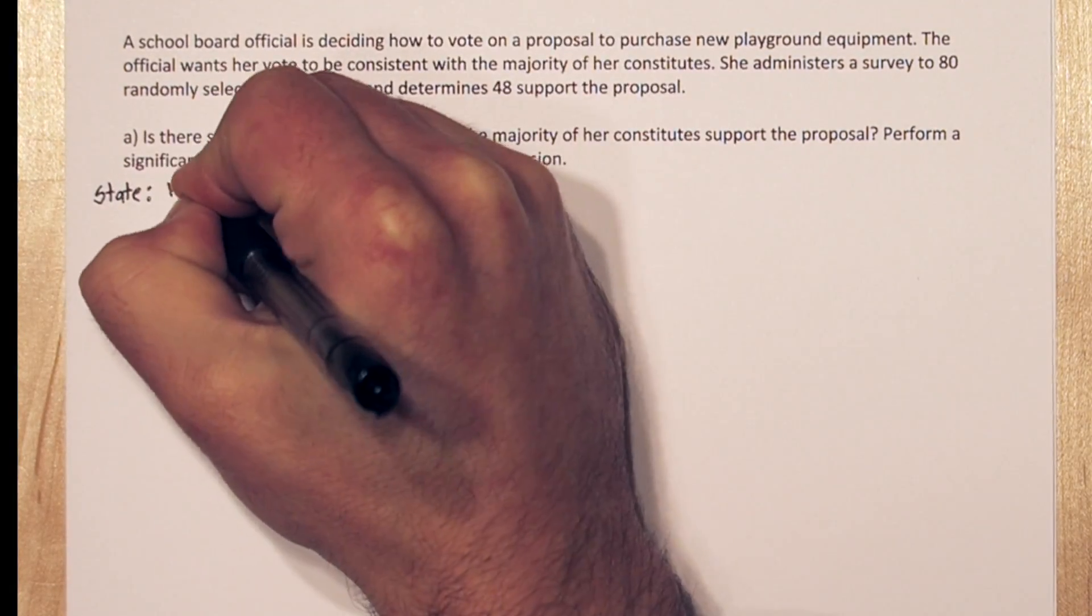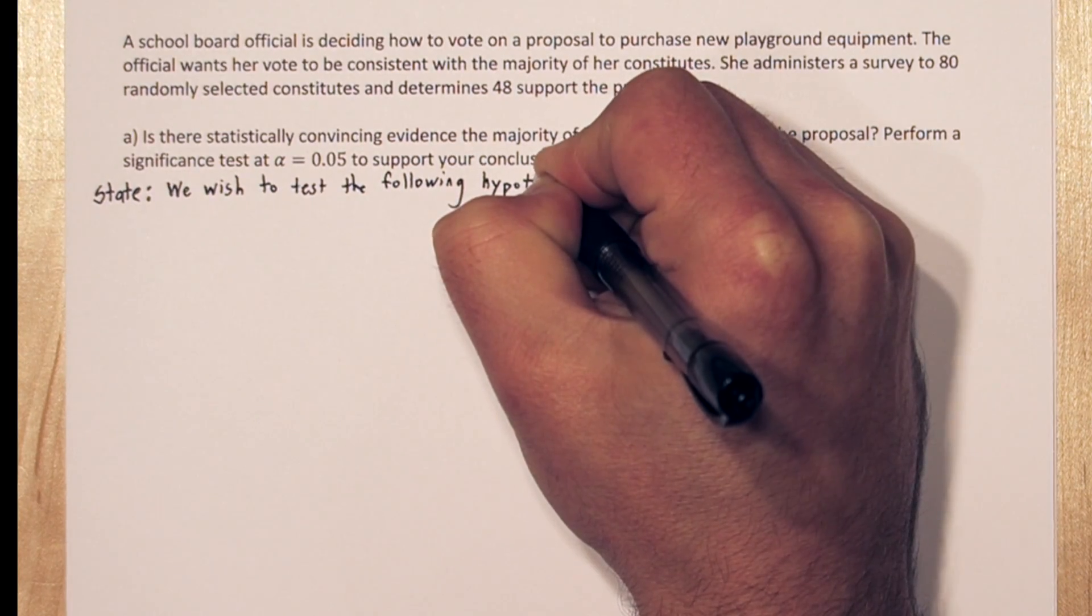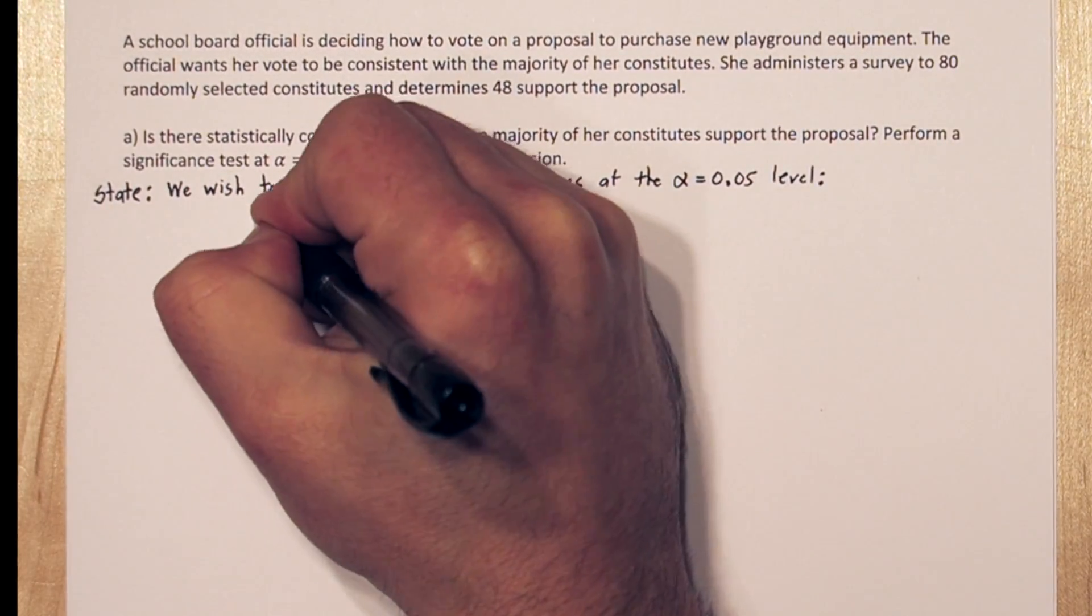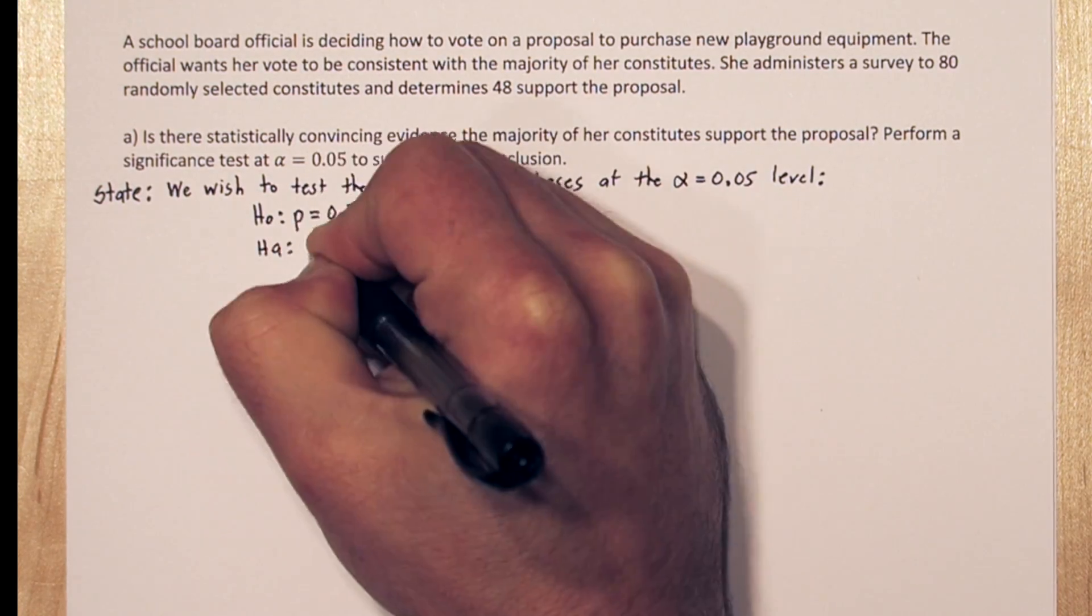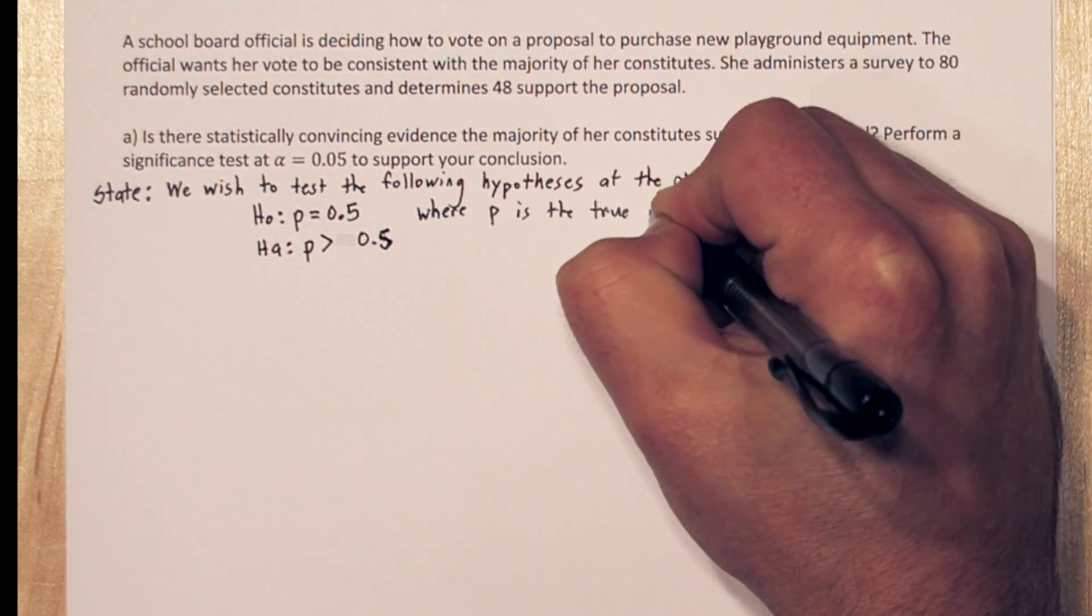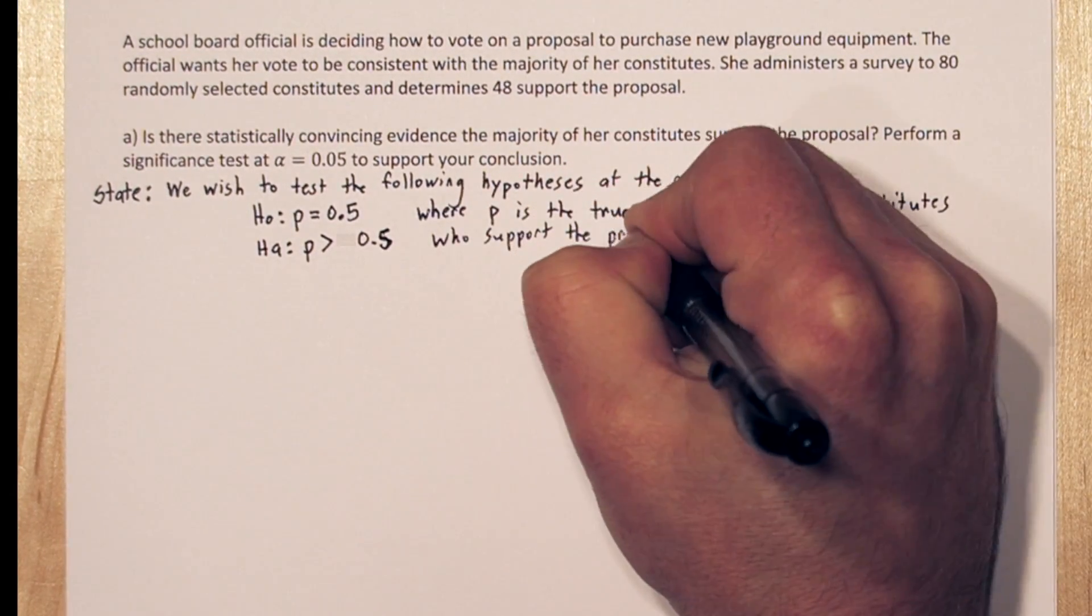Let's use the four-step solving process. We wish to test the following hypotheses at the alpha equals 0.05 level. So our null hypothesis is that p equals 0.5. Our alternative hypothesis is p is greater than 0.5, where p is the true proportion of the constituents who support the proposal.